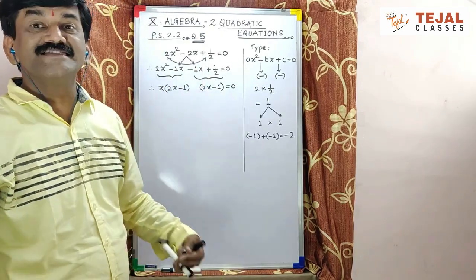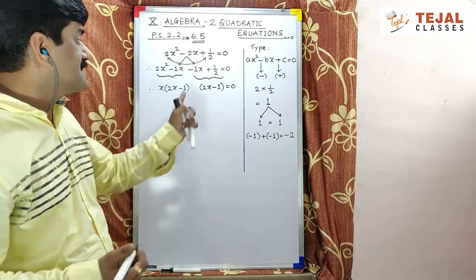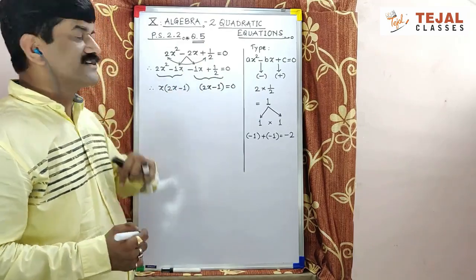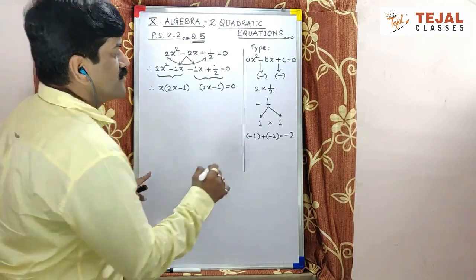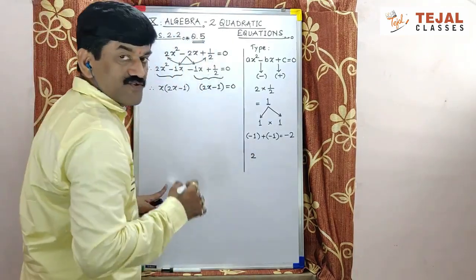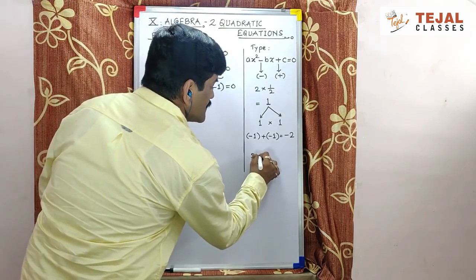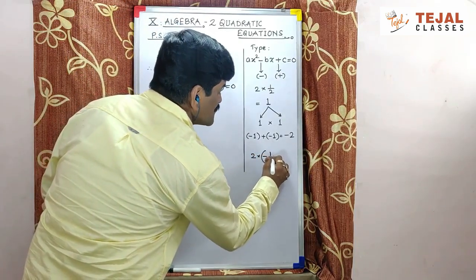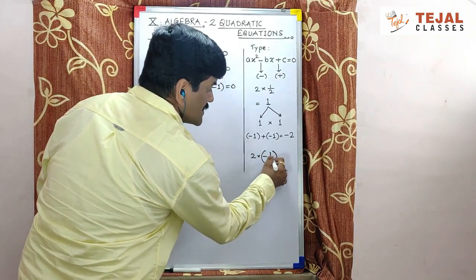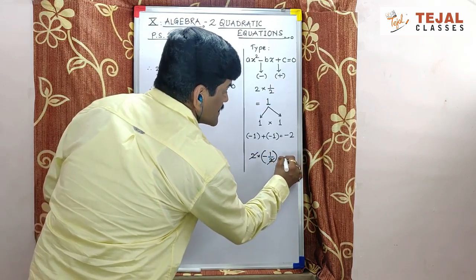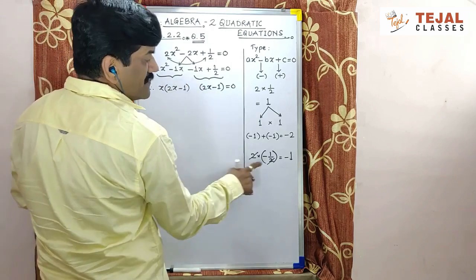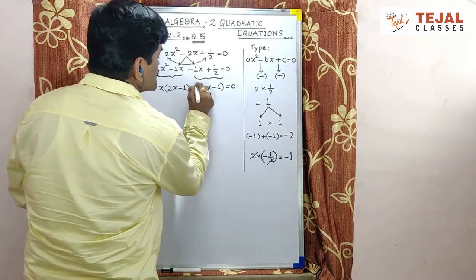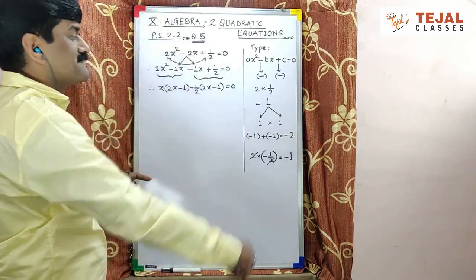2x ko kaunse number se multiply kiya? Is 2 ko. Toh humein minus 1 milega. Ye step yaha pe important hai. Dekho, agar mere paas 2 hai, toh main kis se multiply karayega? Multiply by minus 1 by 2 such a way that 2 to get cancel and will get minus 1. Toh mere paas yahan pe minus 1 by 2 hona zaruri hai. This is minus 1 by 2. Got it?